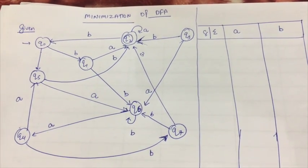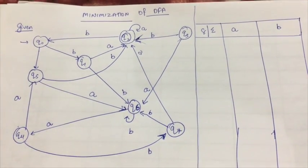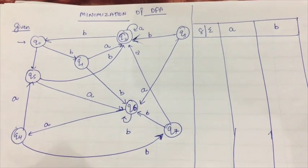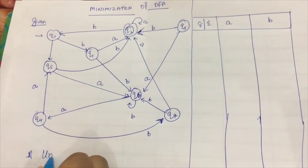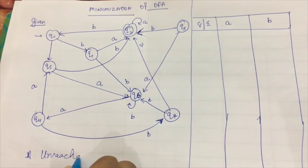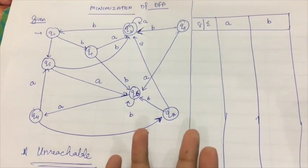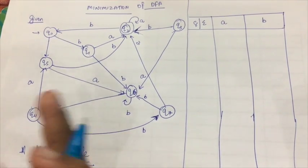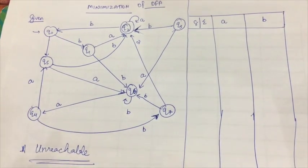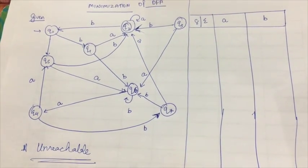First of all, the first step that we have to see by minimizing is determining the unreachable state. So how do we find the unreachable state? What is an unreachable state first of all? When is something unreachable? That is when you cannot reach up till that thing using any state.